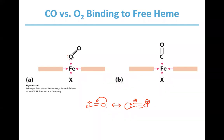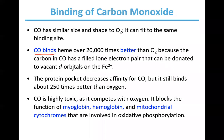Remember, heme by itself shows a 20,000 times greater affinity for CO. But if you put this in the pocket of myoglobin, that binding affinity decreases significantly.